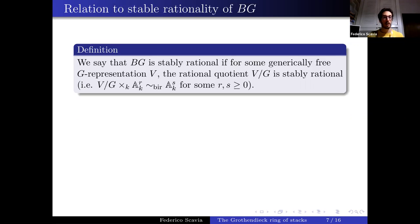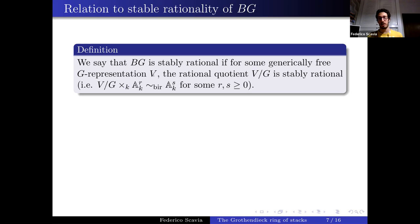So we have the class of BG in K0 Stacks and want to compute it and relate it to other properties of BG. One such property is stable rationality. We say BG is stably rational if there exists some generically free representation V — meaning there is a dense open subset with scheme-theoretically trivial stabilizer — such that the rational quotient V/G is a stably rational variety, i.e., it becomes rational after multiplying by some affine space.